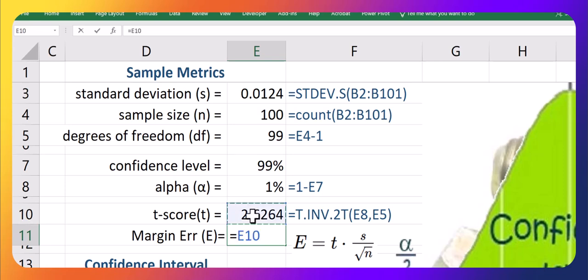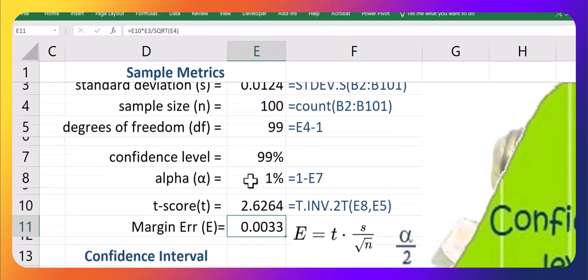So take your t-score times your sample standard deviation, divided by the square root of your sample size, in e4 in our case. And that is your margin of error value.